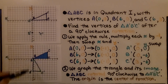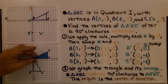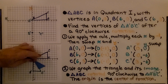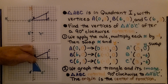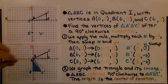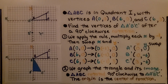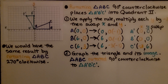We draw line segments to connect the vertices and graph the triangle and its image. We can see that triangle ABC rotated 90 degrees clockwise to triangle A'B'C', with the origin as the center of rotation.